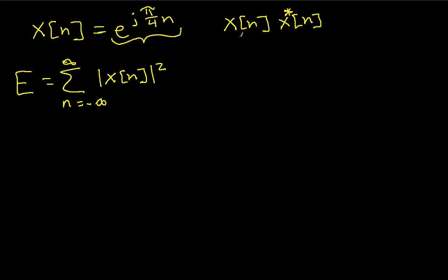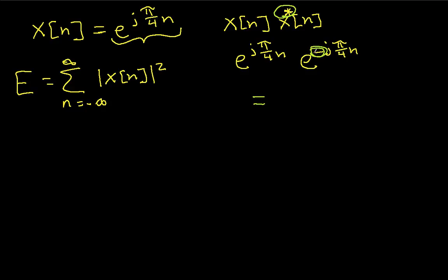So x(n) is going to be e to the j pi over 4n, and x conjugate of n is going to be e to the minus j pi over 4n. When I multiply these two together, I have e to an exponent times e to another exponent, so this is going to be e to the sum of the exponents: j pi over 4n plus minus j pi over 4n. This term minus this term is zero, so the whole thing is e to the zero, which is just one.